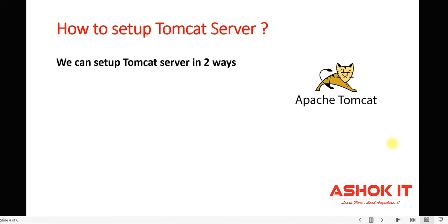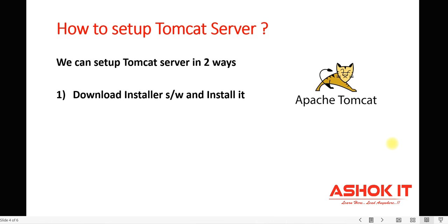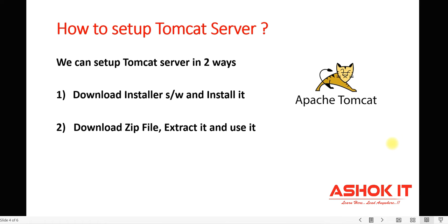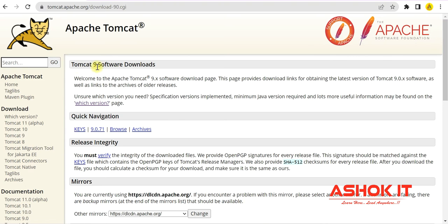We can set up Tomcat server in two ways. First, we can download the Tomcat installer software and install it in our machine. If you don't want to install directly, you can download the Tomcat server as a zip file, extract it, and use that software.